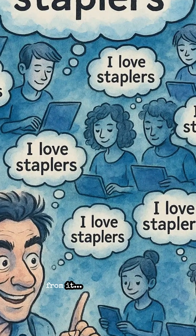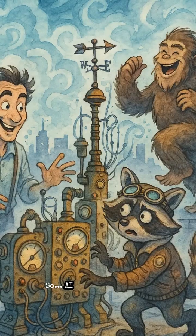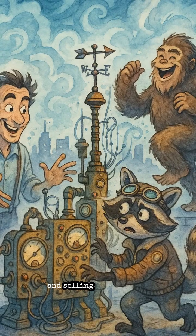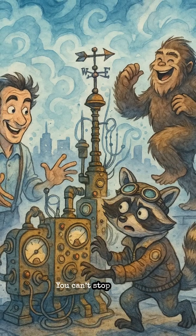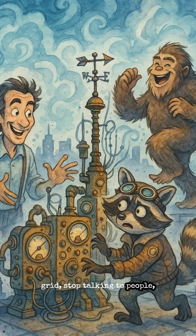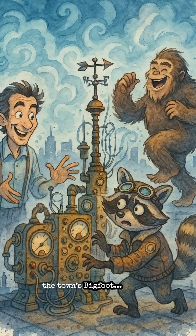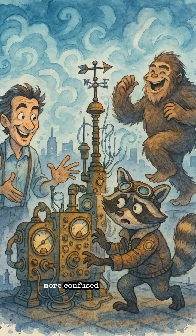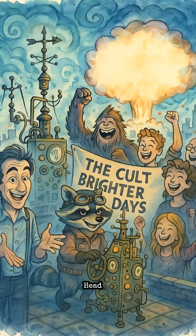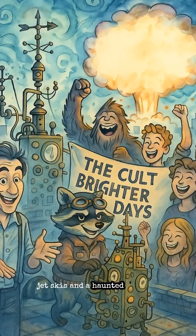The goal isn't to hide from it — it's to make your data so weird it's useless. AI sentiment analysis is basically a raccoon in a suit guessing your feelings and selling those guesses to the highest bidder. You can't stop it from watching, not unless you move to the woods, live off the grid, stop talking to people, grow a suspiciously long beard, and accidentally become the town's Bigfoot. But you can make sure it walks away more confused than you are. Want the full survival guide? Head to thecultofbrighterdays.org before the raccoon decides you're in the market for three jet skis and a haunted blender.